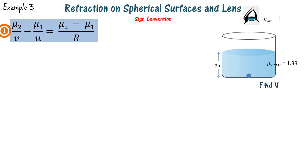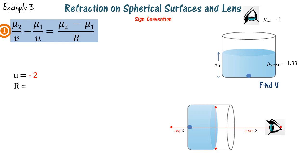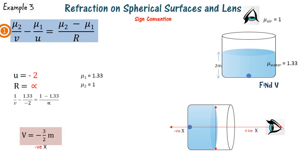We use our equation to solve a problem of refraction on a plane surface. The object is placed in a 2-meter deep pool and we find the position of the image. We reorient the diagram and place the y-axis on the boundary of the medium and water, so u is minus 2 and since it's a flat surface R is infinity. The object is in water, so mu 1 is 1.33. The negative v confirms the image is on the same side as the object, consistent with what we know about refraction on plane surfaces.